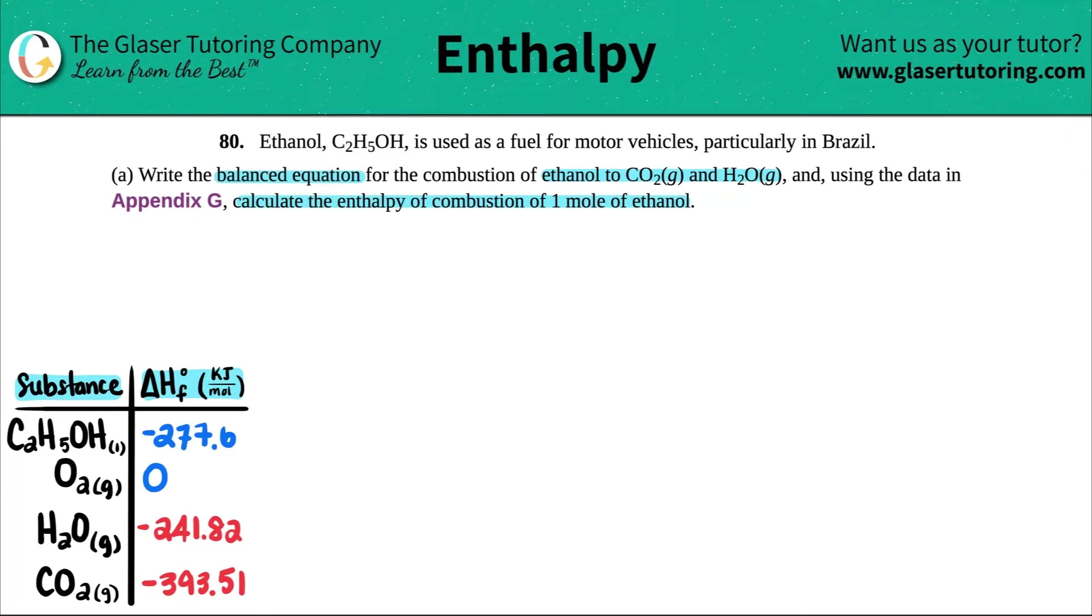Okie dokie. First off, we've got to write a balanced equation. So we've done that time and time again. Chapter four, we've done tons of problems figuring out how to make an equation, how to balance it, so this will be nothing different. We just have to do the combustion equation of ethanol, which is C2H5OH.